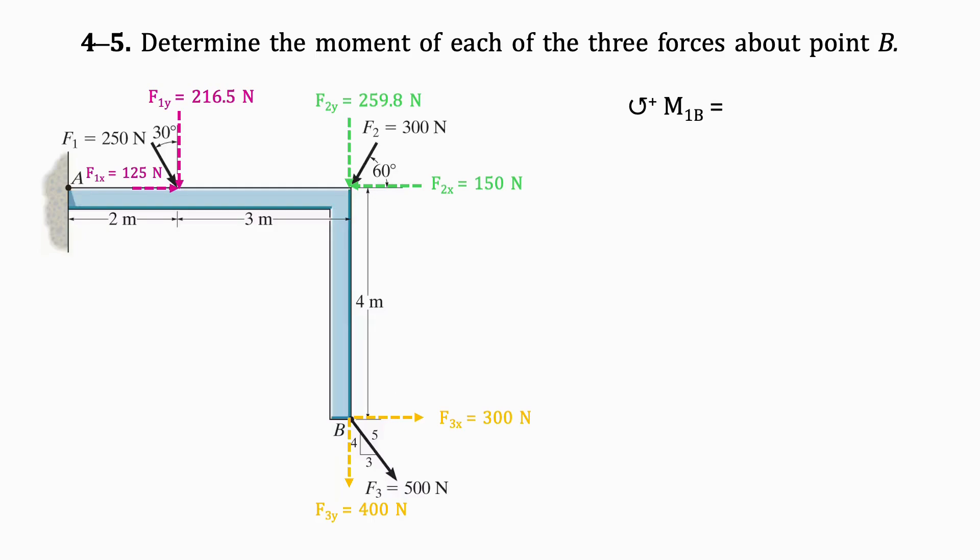The moment produced by the Y component is 216.5 Newtons times 3 meters in the counter-clockwise direction, and the moment produced by the X component is 125 Newtons times 4 meters in the clockwise direction. Adding these together gives us a resultant moment of 150 Newton-meters in the counter-clockwise direction.